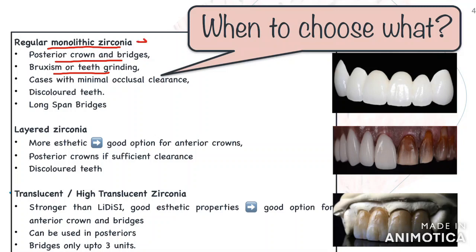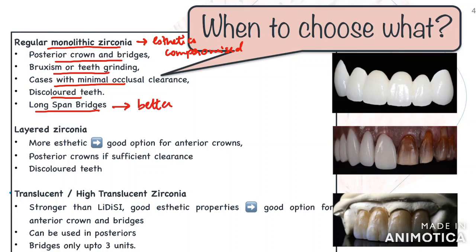Avoid using regular solid zirconia in anterior restorations. You can use it in cases of discoloration as these are generally opaque and mask the discoloration, but try to limit them to the posteriors. These conventional monolithic zirconias have been used for long-span bridges successfully.